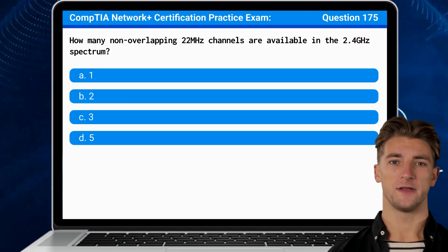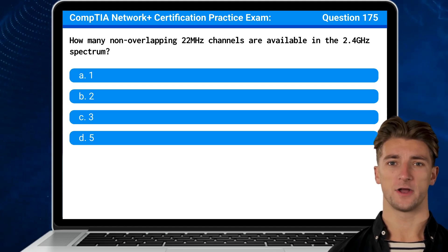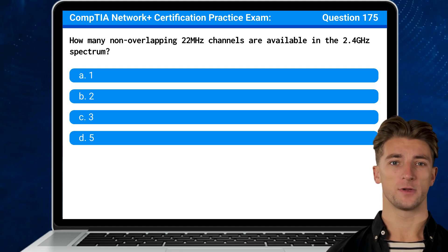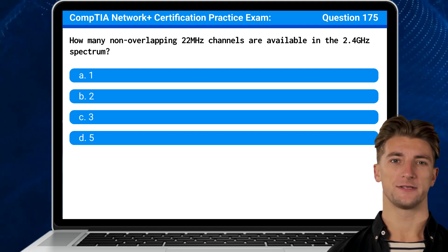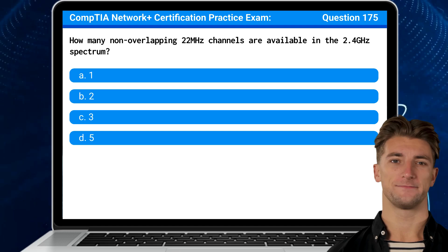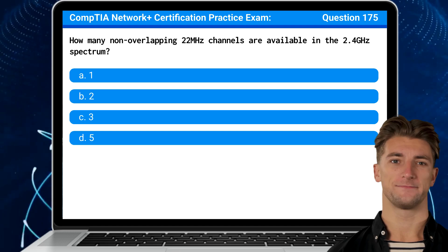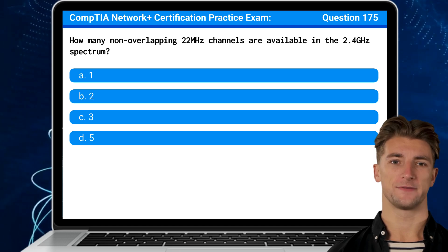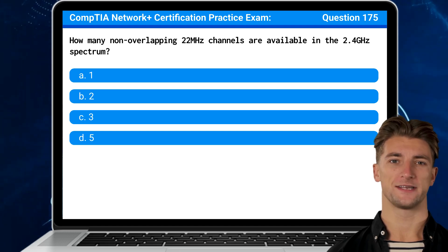Question 175. How many non-overlapping 22 MHz channels are available in the 2.4 GHz spectrum? The answer is C.